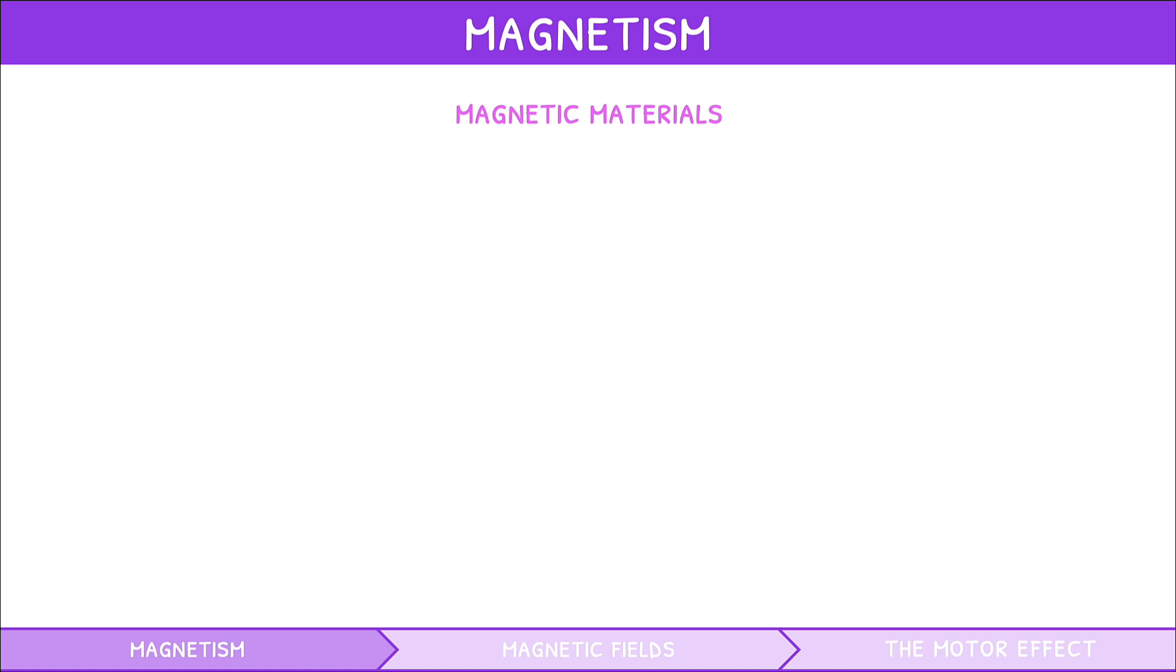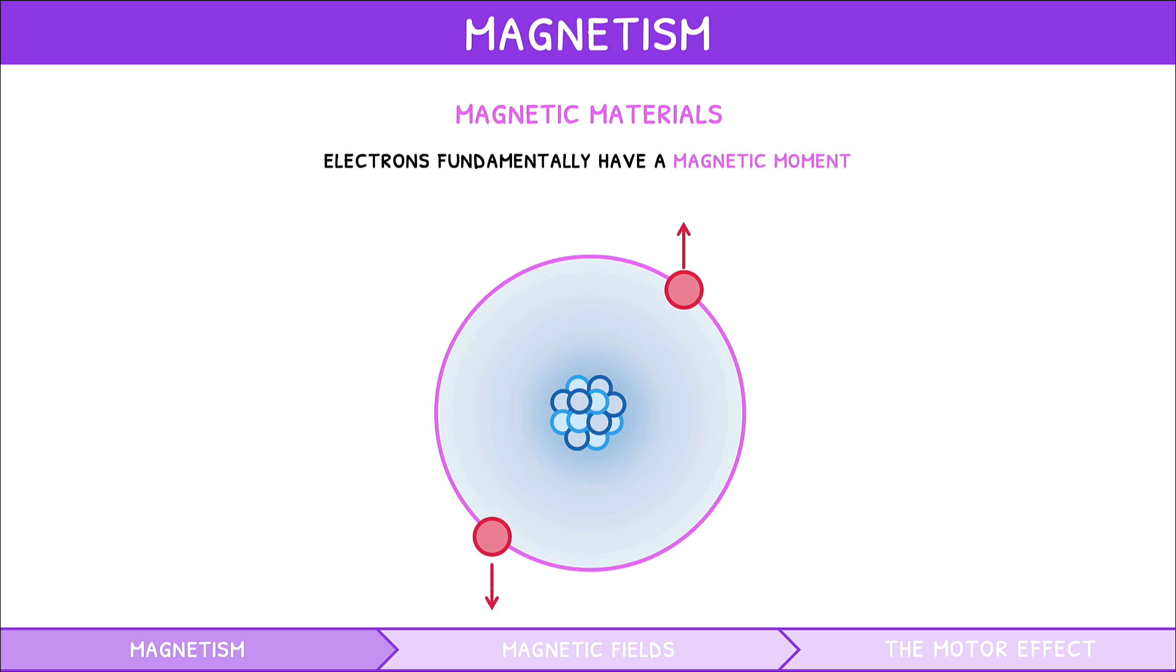Well, to answer this, let's go down to an atomic level. Here, electrons fundamentally have a magnetic moment because they are charges that spin on their axes and move within their orbital. Therefore, each electron in an atom acts as a tiny magnet.